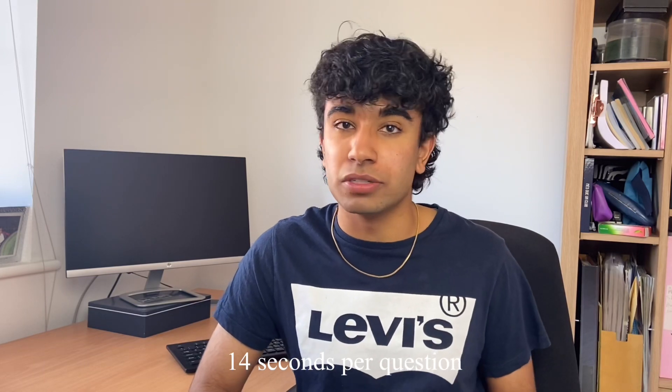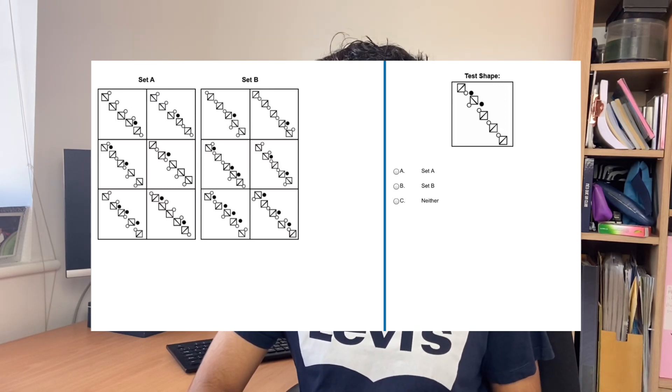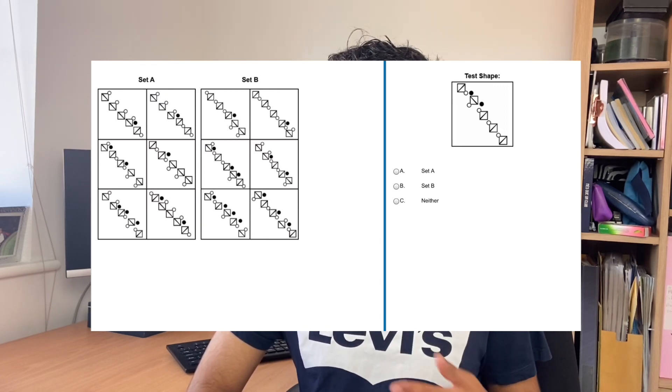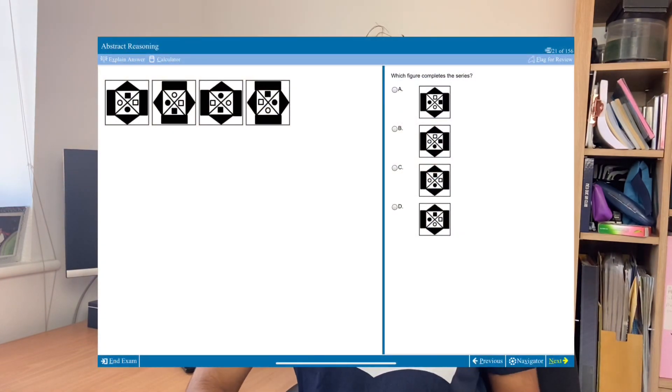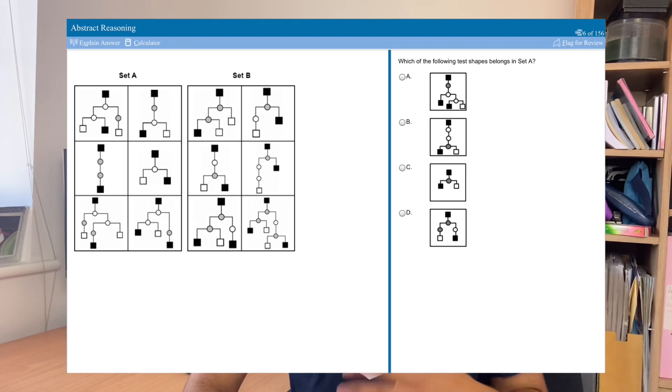On average that gives you roughly 14 seconds per question. There are four types of questions. Type 1: you're given two sets of shapes, each with six boxes called Set A and Set B, and you have to decide whether a given box belongs to Set A, Set B, or neither. Type 2: you're given a series of boxes and must identify the next box in the series. Type 3: you're given a change from one box to another and have to apply that change to a new box. Type 4 is very similar to Type 1 but you must pick one of four boxes.